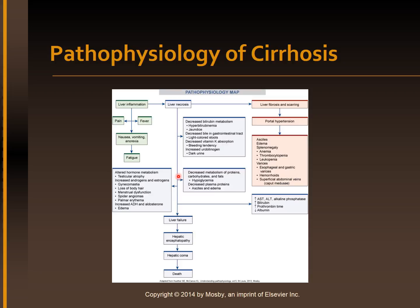Liver necrosis also results in decreased metabolism of proteins, carbohydrates, and fats, and decreased plasma proteins. This also results in increased liver enzymes, increased bilirubin, prolonged prothrombin time, and decreased albumin.